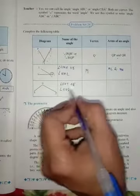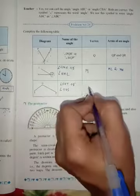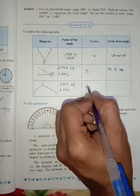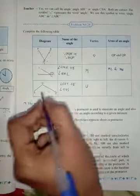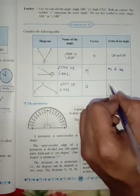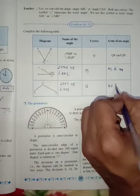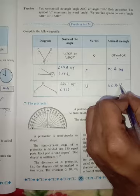So what is the vertex? U is the vertex of this angle, so you can write here U. What are the arms of this angle? So it is US and UT. This is the arms of this angle.